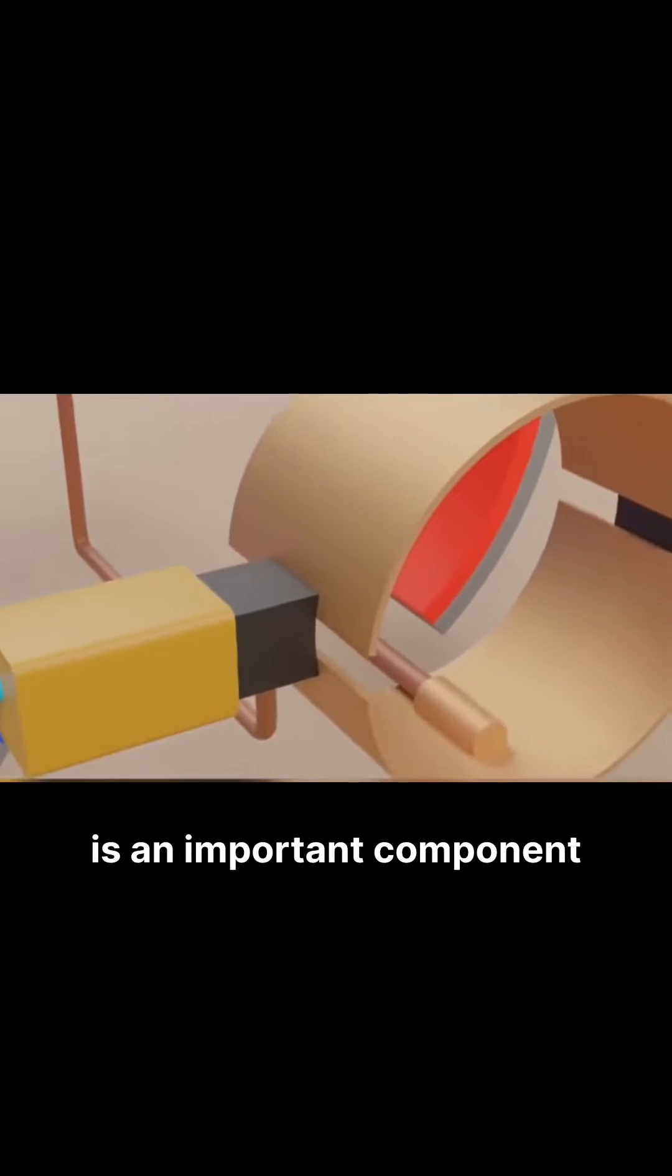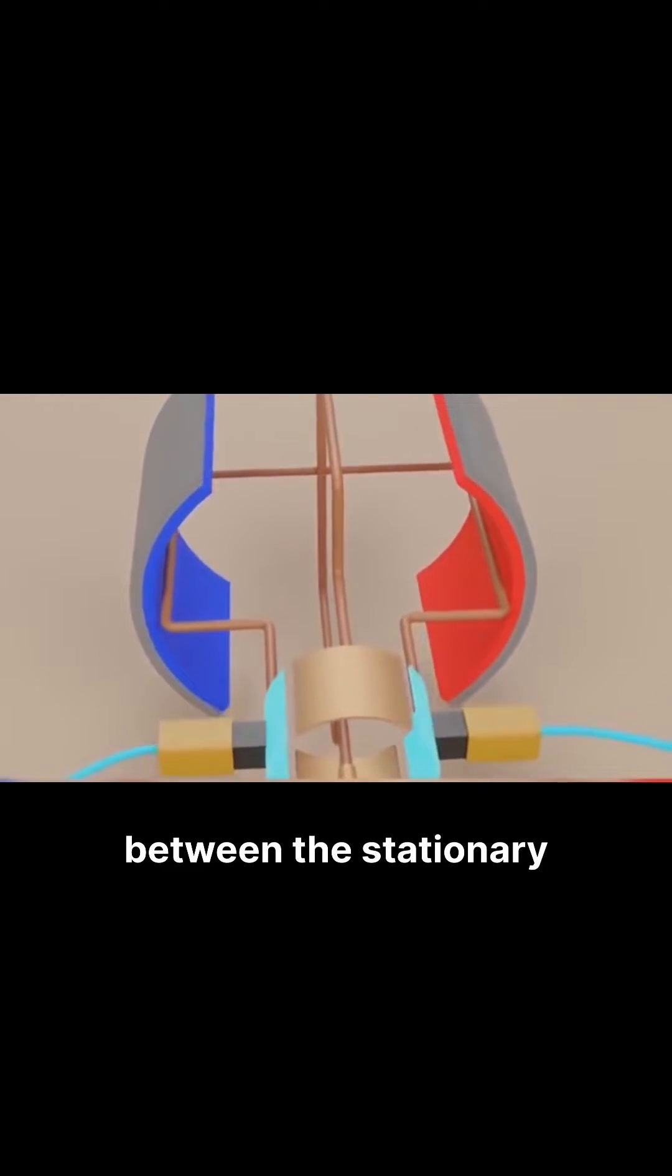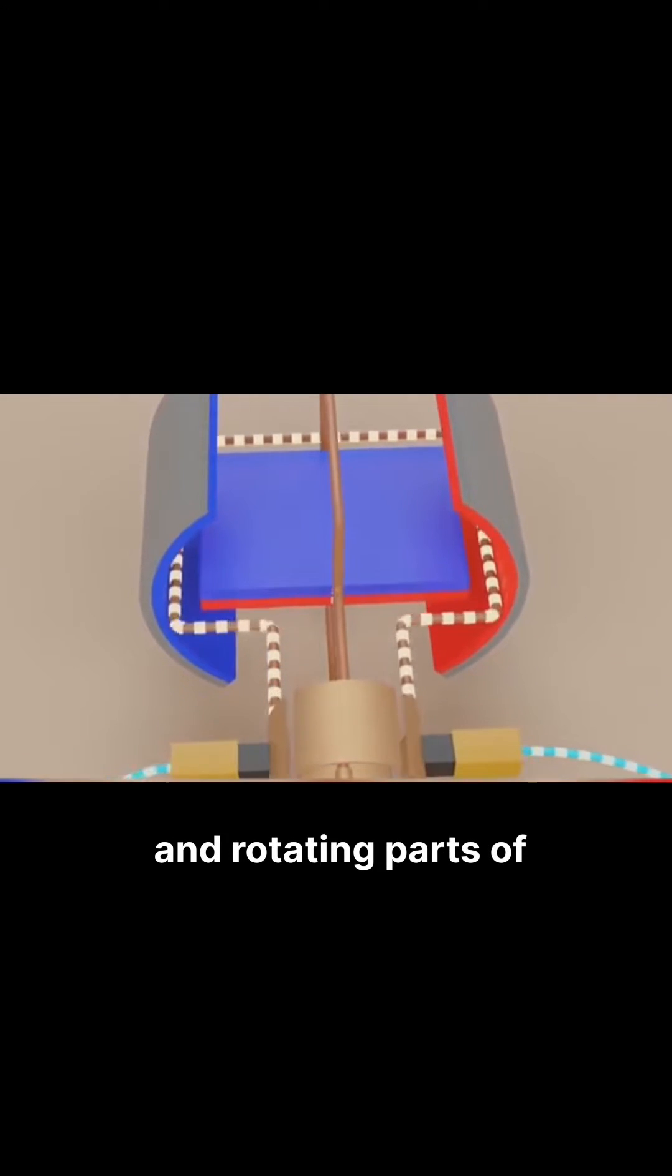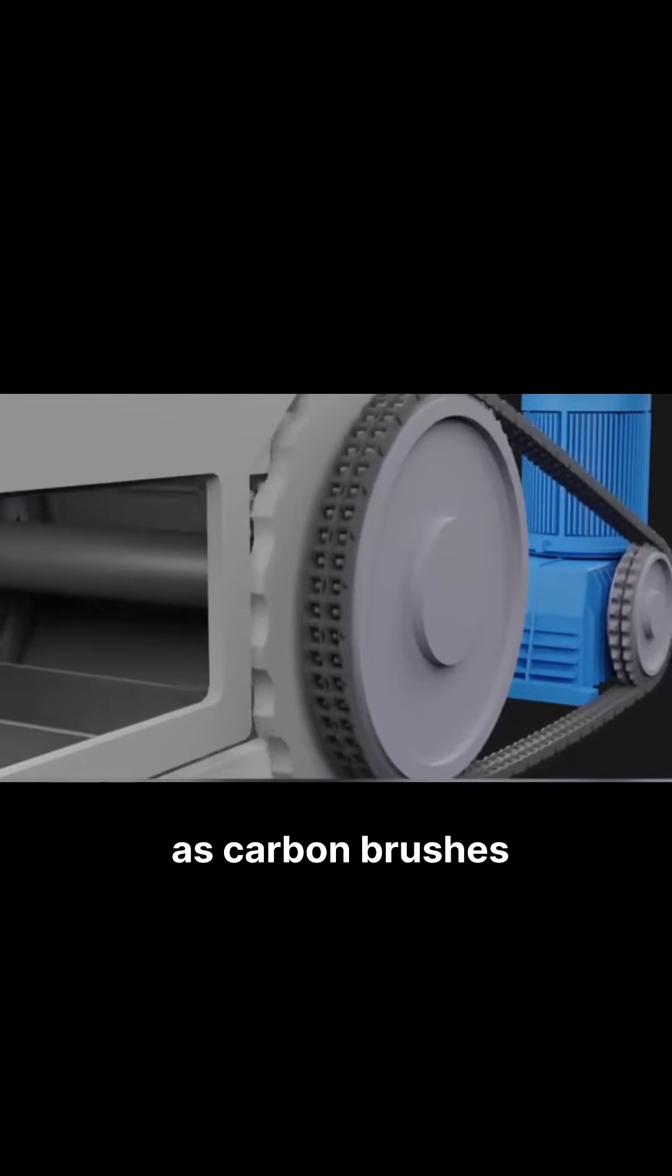The brush of a brushed motor is an important component located in the gap between the stationary and rotating parts of the motor. Most brushes are made of graphite, which are also referred to as carbon brushes.